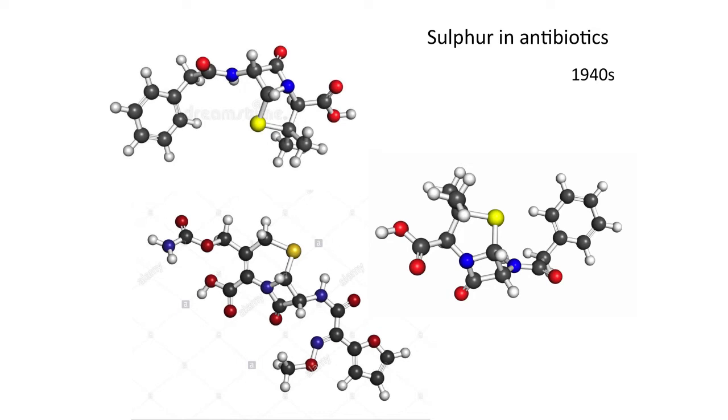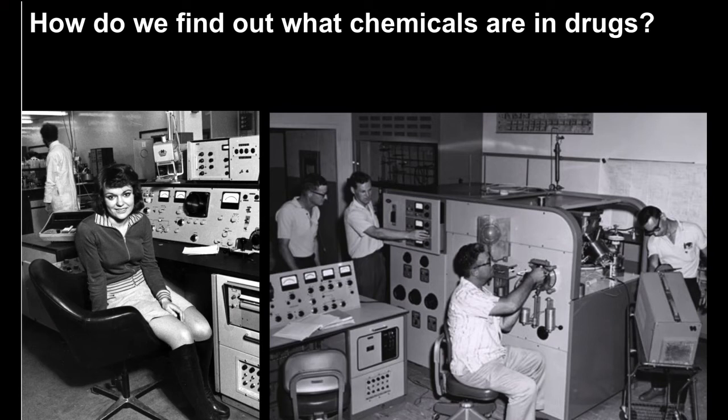But how do you find out what chemicals are in these drugs? We would use a mass spectrometer. I've included a very old picture of myself here to show that I actually started using this when I was 16 and became fascinated with the workings of the mass spectrometer.